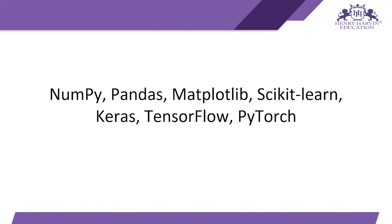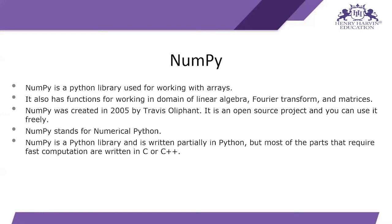So here are seven libraries which we are going to talk about in this session, though there are abundant libraries in these domains. Starting with NumPy — NumPy is a Python library used for working with arrays. It also has functions for the domains of linear algebra, Fourier transform, and matrices. Basically, NumPy is the library we use for making NumPy arrays.